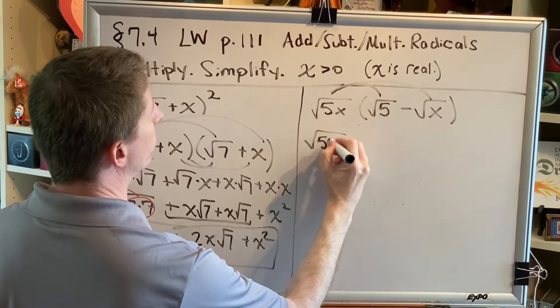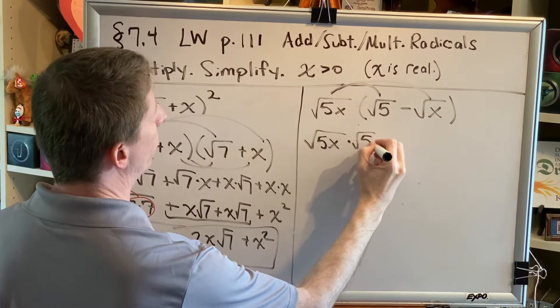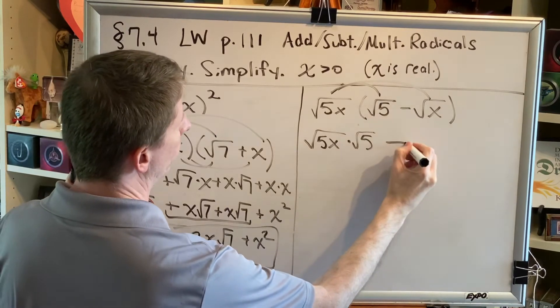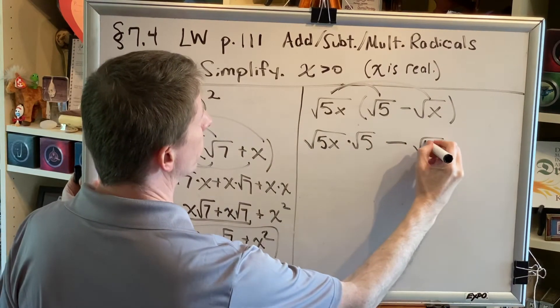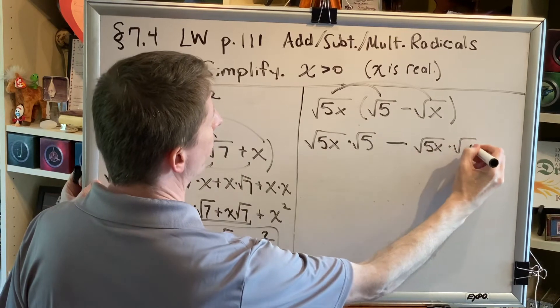This gets distributed to both of these places. So we have the square root of 5x times the square root of 5, then this minus symbol, square root of 5x times the square root of x.